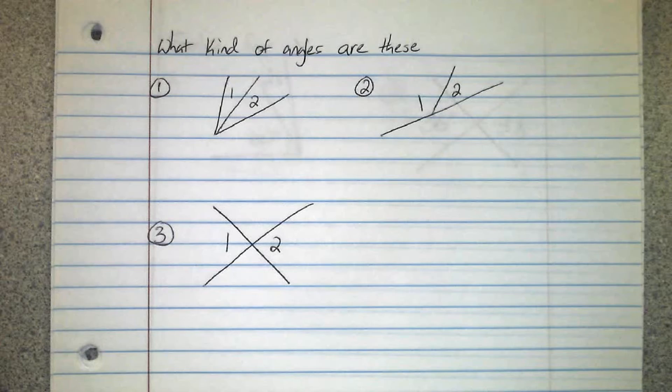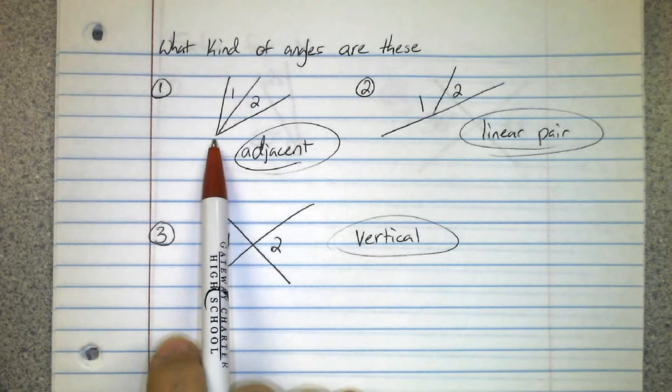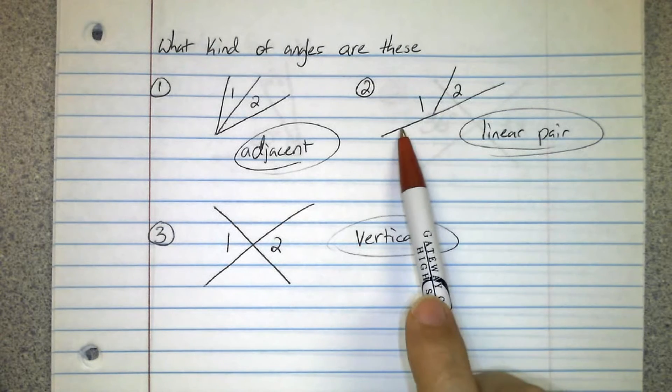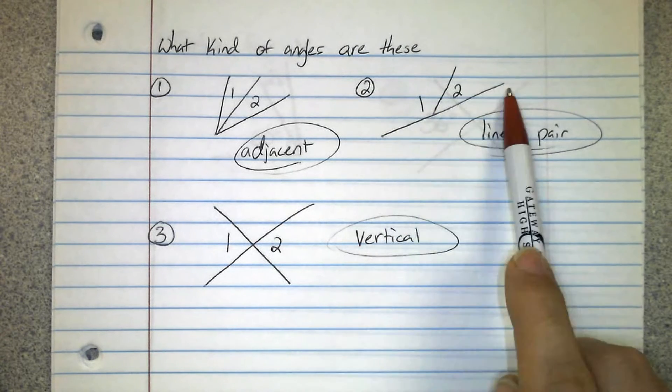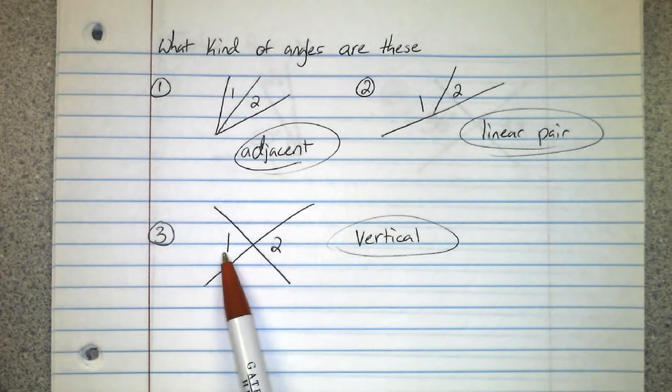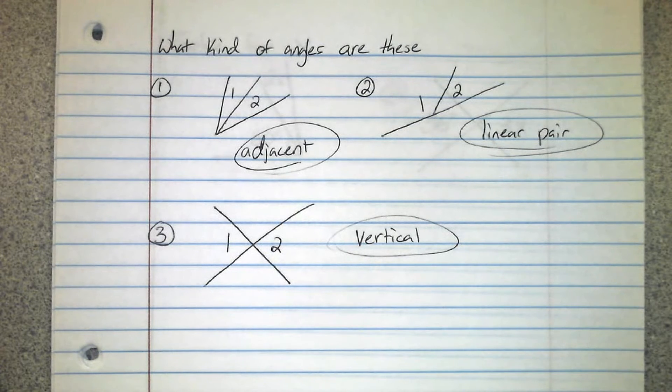Give these three a shot. We have two angles that share a common side and vertex, that would be adjacent angles. These ones not only are adjacent angles, but the non-common side is opposite rays, in other words they're on a line. That's a linear pair. Two opposite angles formed by the intersection of two lines, these are vertical angles. Don't forget vertical angles are congruent, so if angle one was 50 degrees, angle two would be 50 degrees.